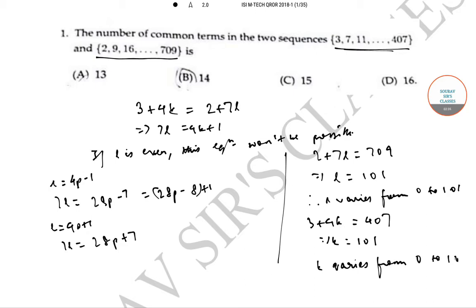Now, 7(4p - 1) < 407, and solving this gives p ≤ 14.7, that is p ≤ 14. Therefore, the correct option is option B: 14.